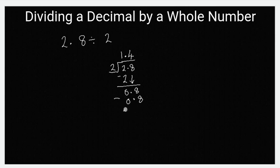0.4 times two would give you 0.8. You can put your zero here and then you subtract. Then we have zero, so our answer right here would be one point four. That's our quotient. So two point eight divided by two is equal to one point four. Easy peasy, right?